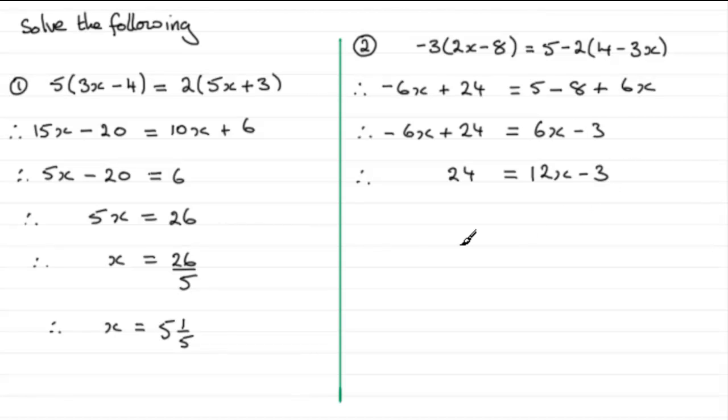Now I'm going to remove the minus 3 by adding 3 to both sides. 24 add 3 is going to be 27 and 12x minus 3 plus 3. Well that's just going to leave me with 12x.